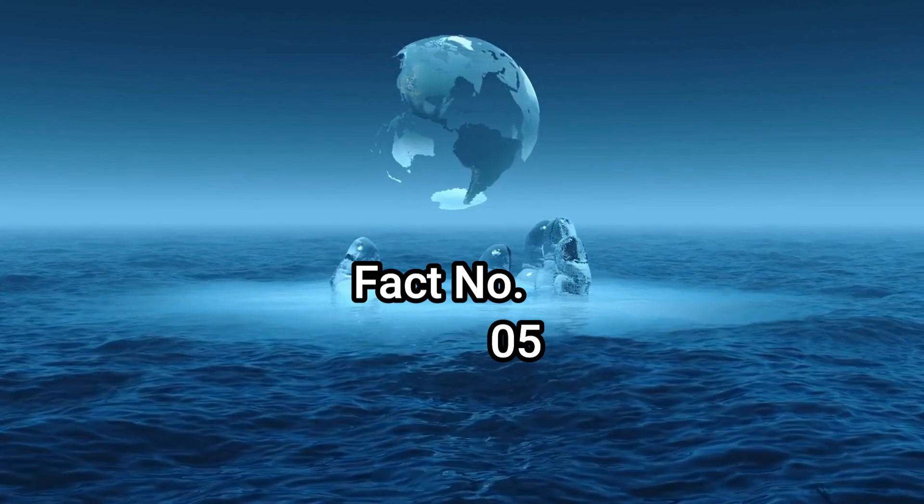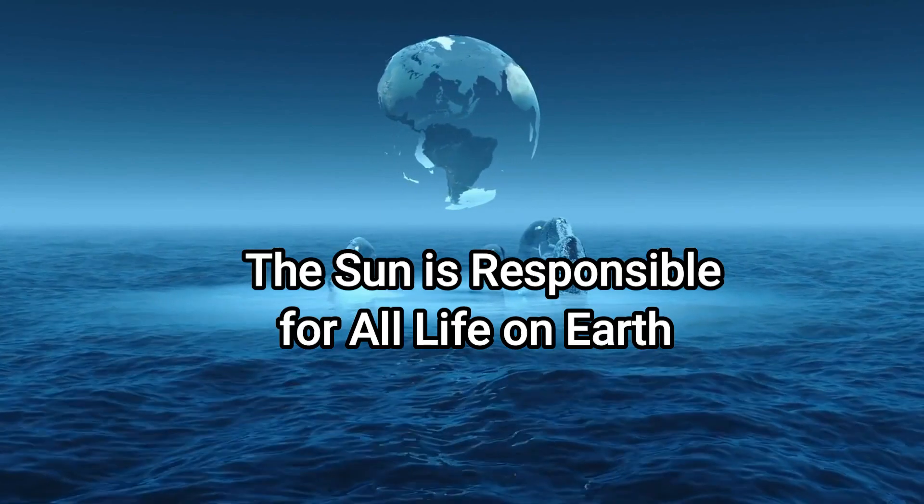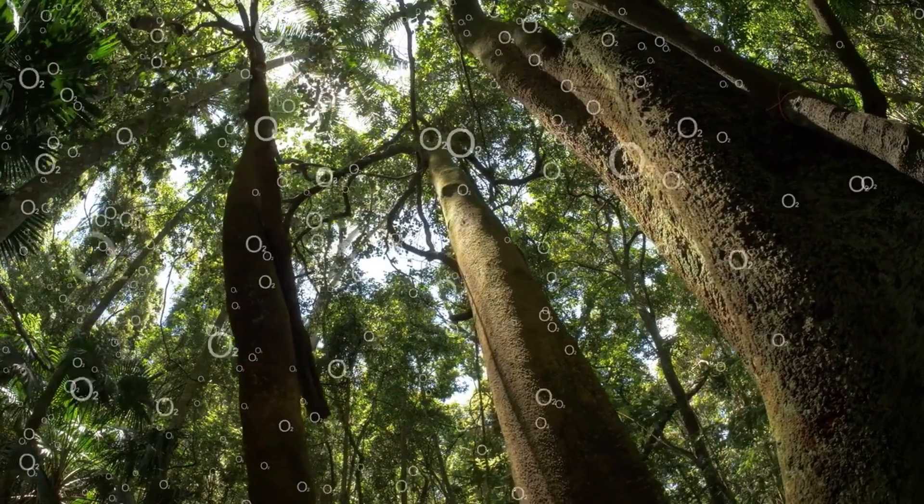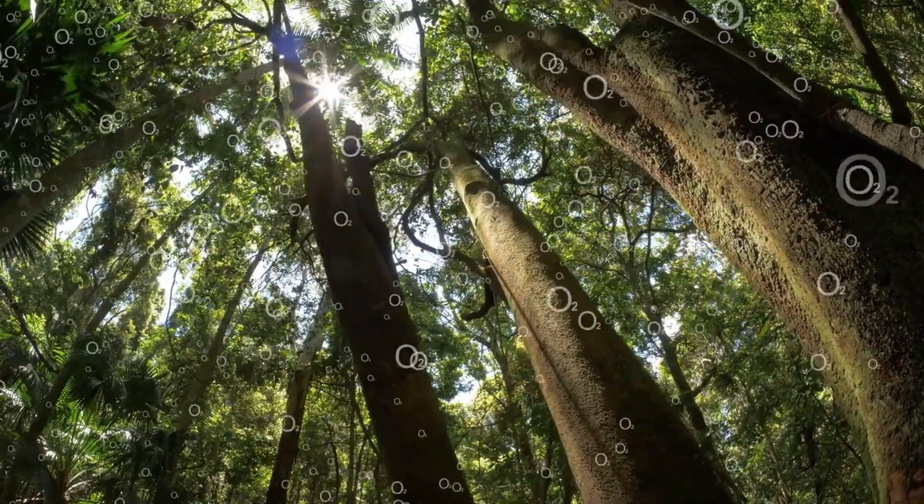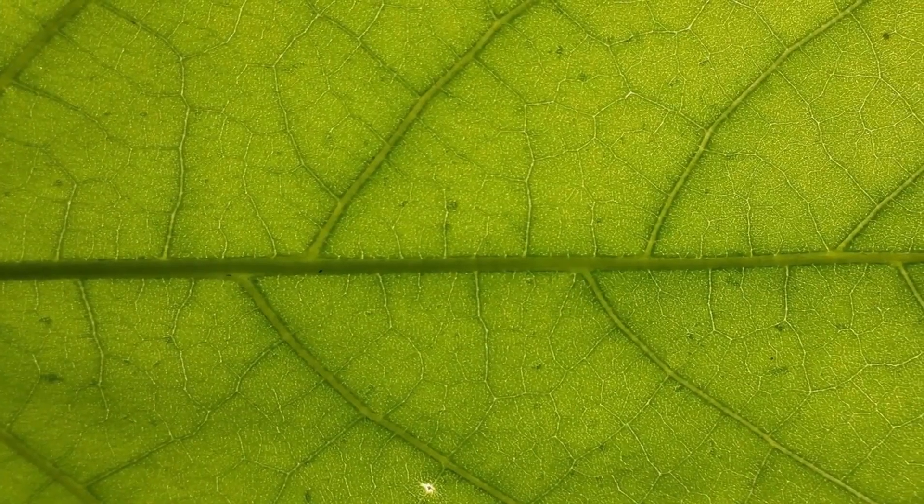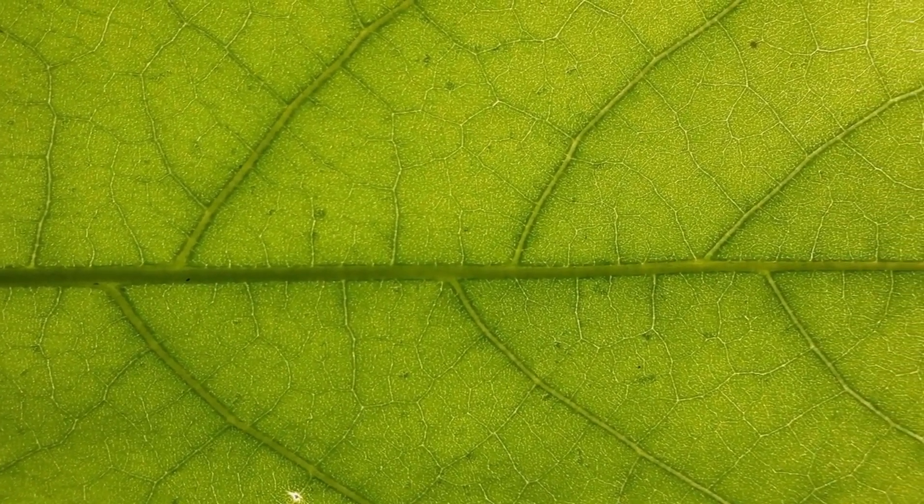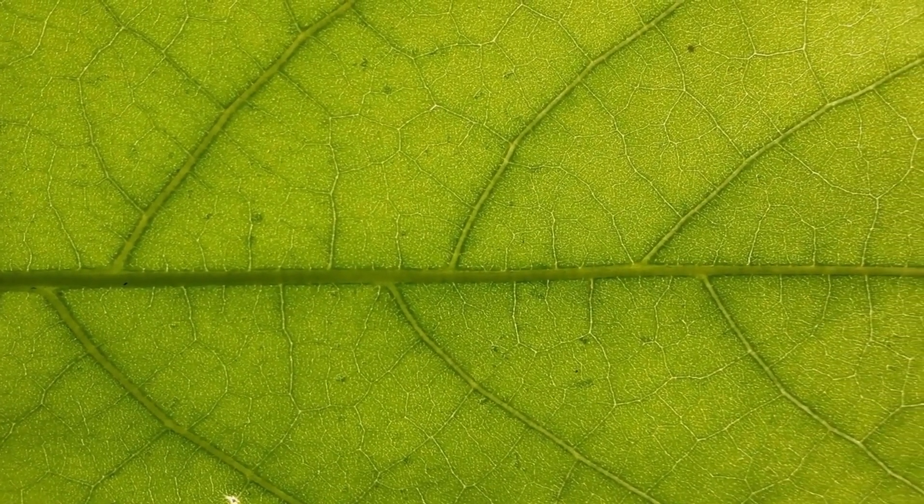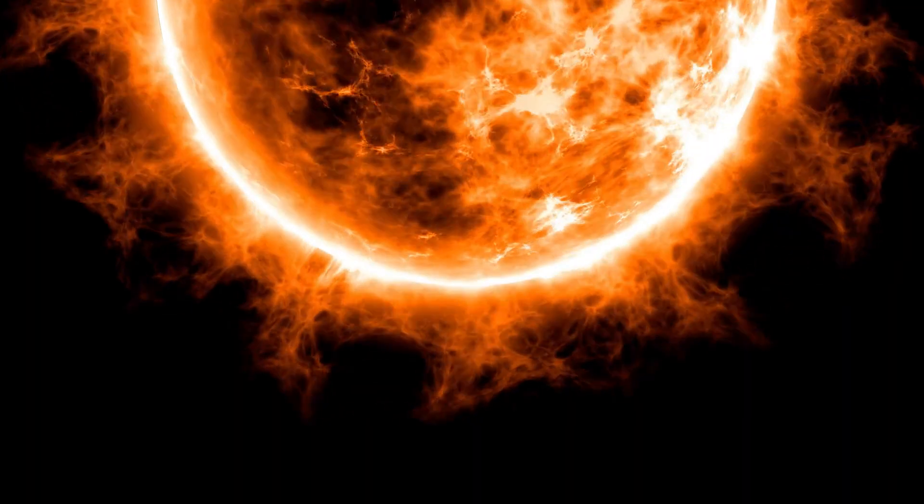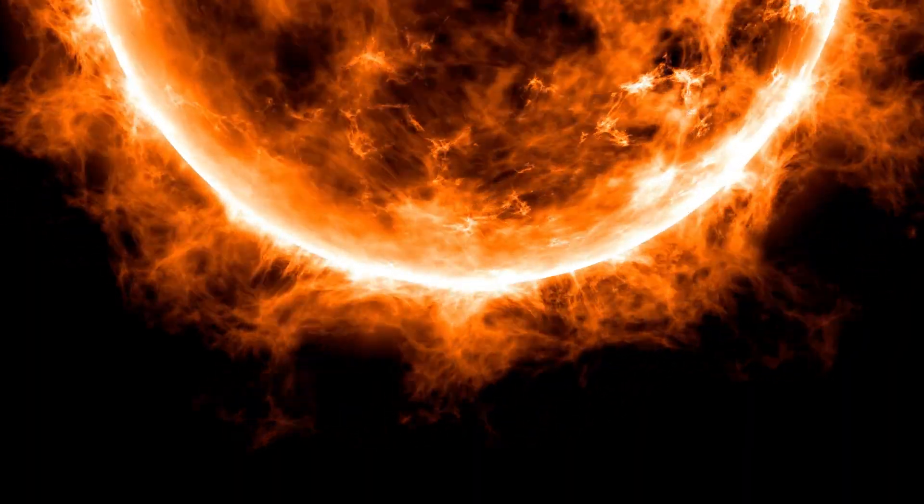Fact number five, the sun is responsible for all life on Earth. As we mentioned earlier, the sun provides the energy that supports all life on Earth. Through a process called photosynthesis, plants are able to convert the sun's energy into food, which is then consumed by other living creatures. Without the sun, life on Earth wouldn't be possible.